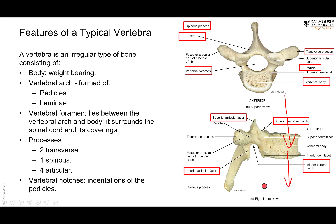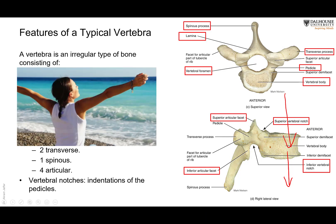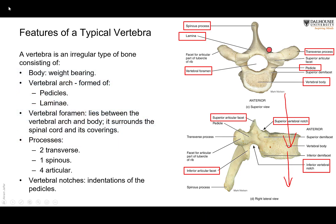Attached to the arch are processes. Two transverse processes project laterally to each side. One spinous process projects posteriorly — it is tapered, hence the name. These processes serve as muscle attachment sites and facilitate movement. There are also a superior and inferior pair of articular processes. These articular processes provide surfaces where adjacent vertebrae articulate with each other, but they are not weight-bearing — they allow movement between vertebrae. Weight-bearing is the role of the body.